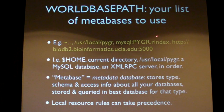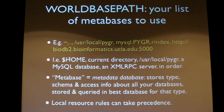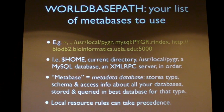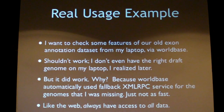This operates through a mechanism called Metabases — a metadata database that stores the type, schema, and access information about all your different datasets. When you start up, you provide a WorldBase path, which is just a list of Metabases you want it to use: for example, my home directory, my current directory, a system directory, a MySQL database, and an XML RPC server, in order. This is searched in order of precedence, so you can force local rules to take precedence over remote rules.